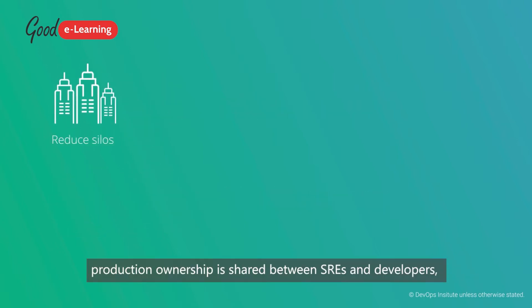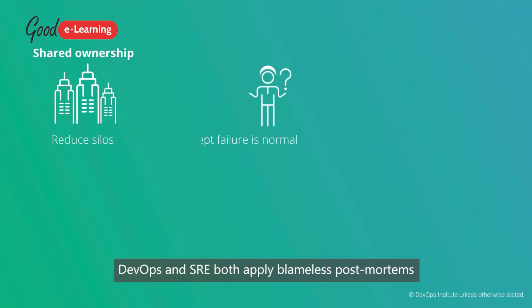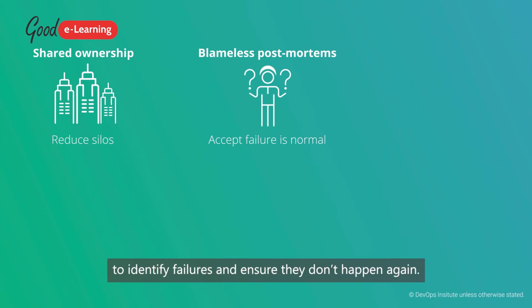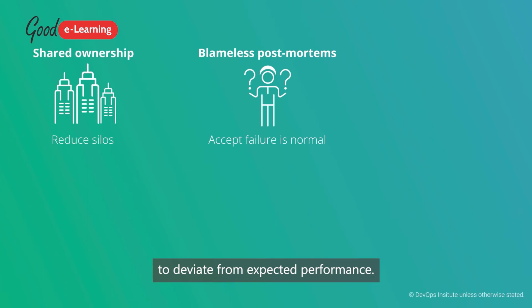In SRE, production ownership is shared between SREs and developers, reducing silos, and the teams use the same tooling to ensure a shared approach. DevOps and SRE both apply blameless postmortems to identify failures and ensure they don't happen again. This normalizes failure, but SRE takes a further step, implementing error budgets — specifying how much the system is allowed to deviate from expected performance.